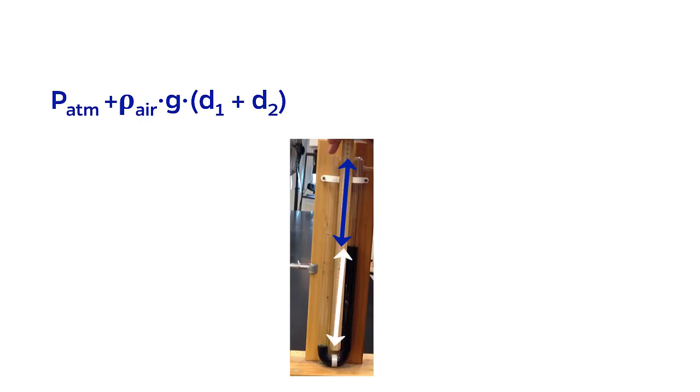Then, I'll define D2 as the distance from the top of the fluid on the left and the fluid on the right. This is the white arrow. Therefore, the total height of air on the left side is D1 plus D2.